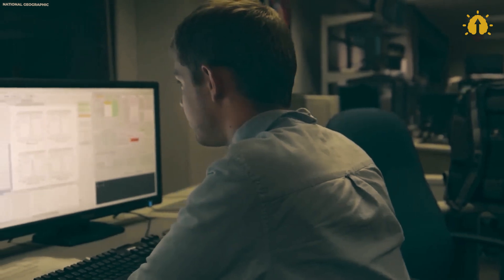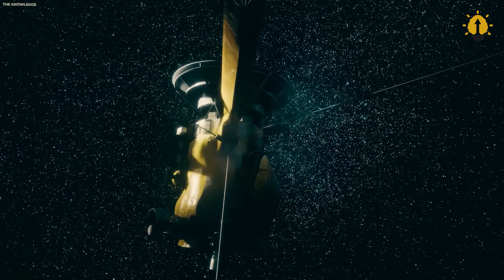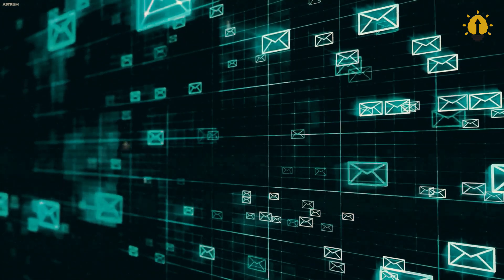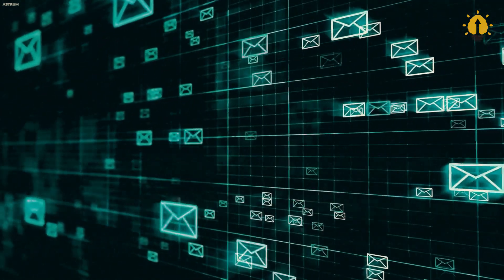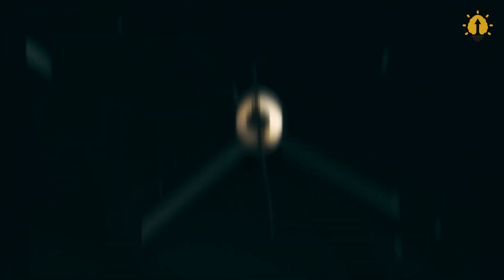You see, in the vacuum of space, everything moves at staggering speeds. Planets, comets, and of course, spaceships. For a spacecraft to settle into orbit around a planet, it must match that planet's orbital velocity precisely.